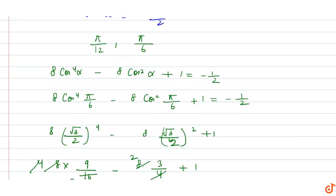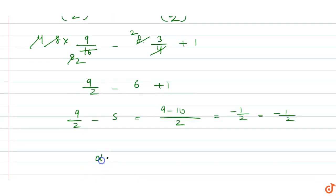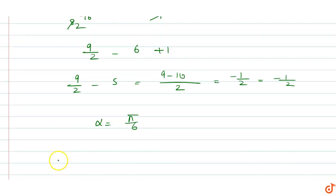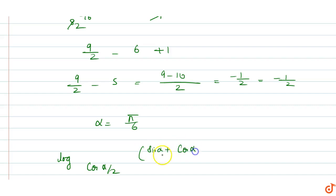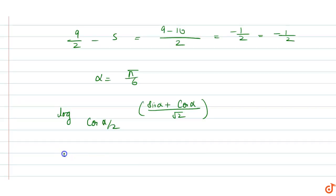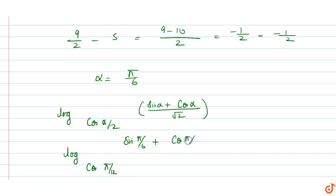LHS is equal to RHS. तो यहां से α की value π/6 होगी। तो अब हम value put करेंगे। हमारे पास equation है: log of cos(α/2) of (sinα + cosα)/√2. तो यह π/12 है। यह value है: sin(π/6) + cos(π/6) upon √2.